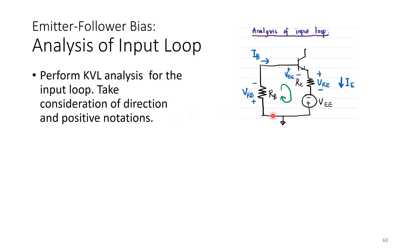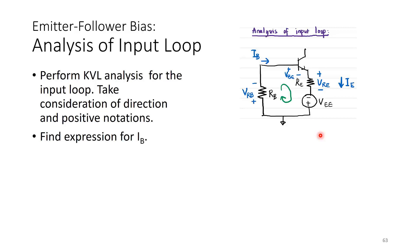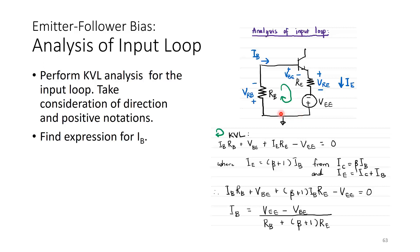For the input loop KVL, we have: IBRB + VBE + IERE − VEE = 0. The voltage source VEE has negative polarity at the top. Since IE = (β + 1)IB from IC = βIB and IE = IC + IB, substituting into the expression and solving for IB gives: IB = (VEE − VBE) / (RB + (β + 1)RE). This looks like Ohm's law and resembles the IB expression format from previous configurations.